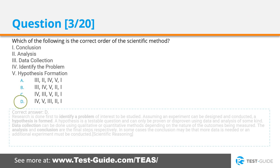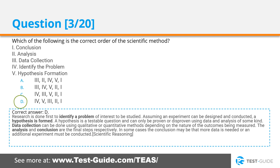The correct answer is D. Research is done first to identify a problem of interest to be studied. Assuming an experiment can be designed and conducted, a hypothesis is formed. A hypothesis is a testable question and can only be proven or disproven using data and analysis of some kind. Data collection can be done using qualitative or quantitative methods depending on the nature of the outcomes being measured. The analysis and conclusion are the final steps respectively. In some cases the conclusion may be that more data is needed or an additional experiment must be conducted.